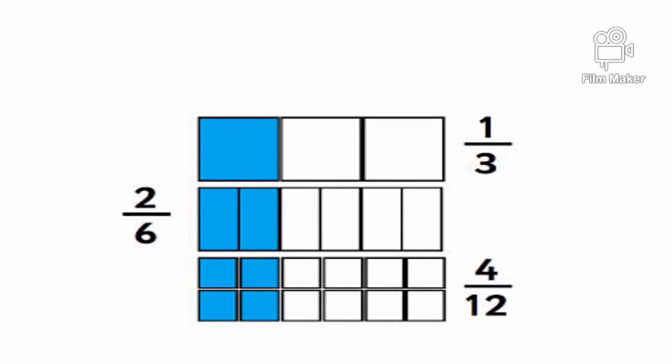Another set of examples. This figure is 1/3. It is shaded by 1. But 1/3 - we will divide this 1 into 2, so it will become 1, 2, 3, 4, 5, 6. If we shade the 2 parts, it will become 2/6. So 2/6 is equivalent to 1/3.